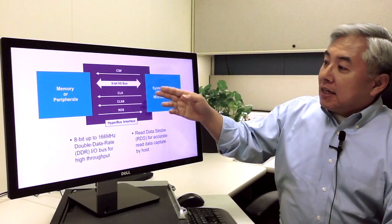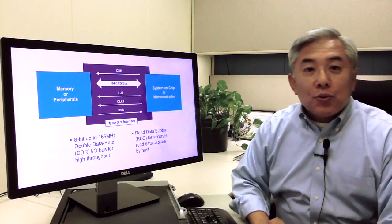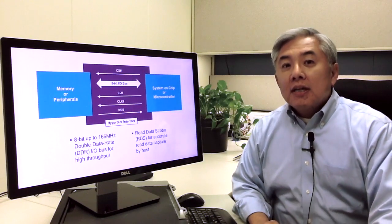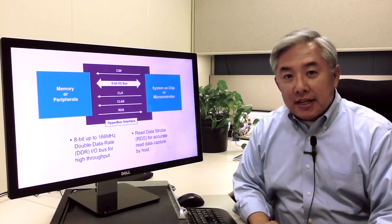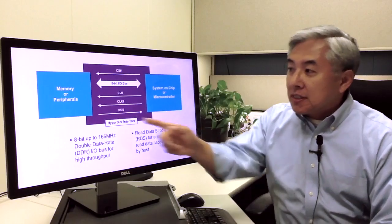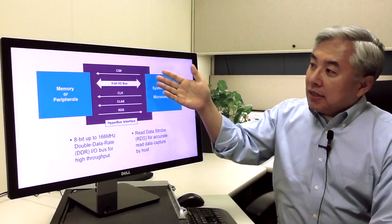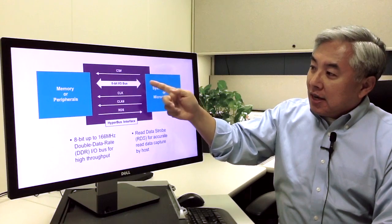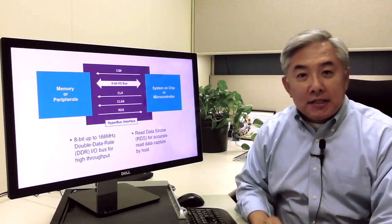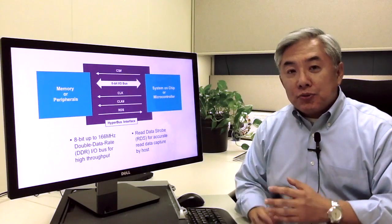And the RDS stands for read data strobe. This allows the host to capture data in an accurate fashion. So this is an output signal coming from the memory to the host. So again, it's 1, 9, 10, 11, 12. 12-pin bus to transact data.